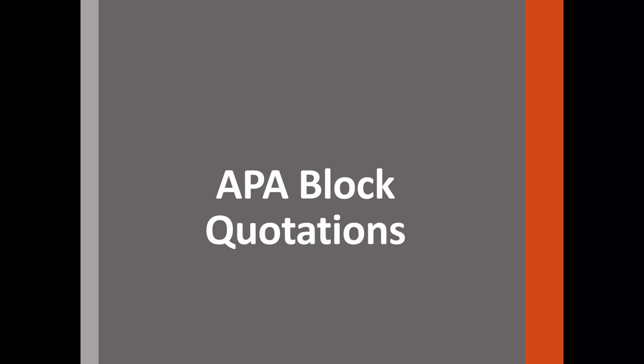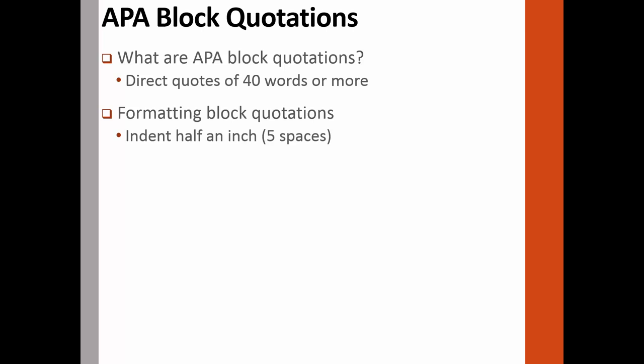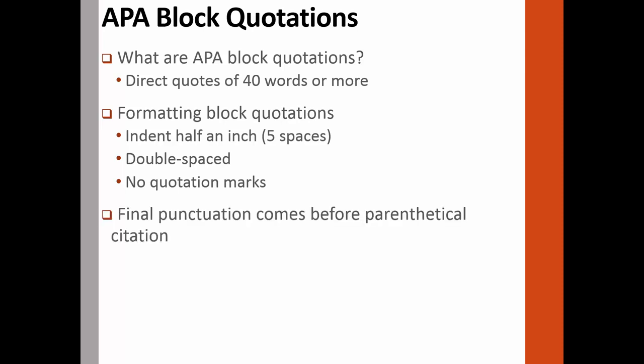Sometimes when writing a research paper, you may need to include a large quotation to emphasize the importance of your research or argument. These large quotations are called block quotes. In APA, block quotations are direct quotes that consist of 40 words or more. To format block quotes, indent the large quote five spaces and keep the quote double spaced. There should be no indentation as there usually would be when you begin a new paragraph, and there should be no quotation marks. By indenting the quote, you are signaling to your reader that the information is quoted from another source. Lastly, the parenthetical citation is placed at the end of the block quote after the final punctuation. If the author is stated in the text when introducing the quote, place the copyright year in parentheses after the author's name and the page number in parentheses after the final punctuation mark.